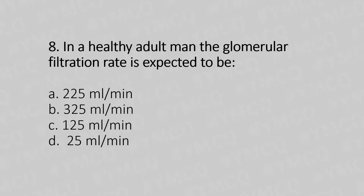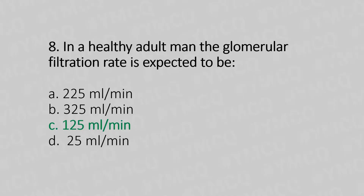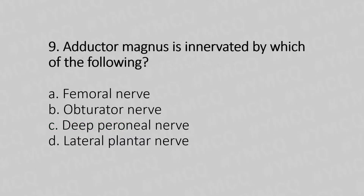Question 8: In an adult man, the glomerular filtration rate is expected to be — Option A: 225 ml/min. Option B: 325 ml/min. Option C: 125 ml/min. Option D: 25 ml/min. The answer is option C — 125 ml/min.